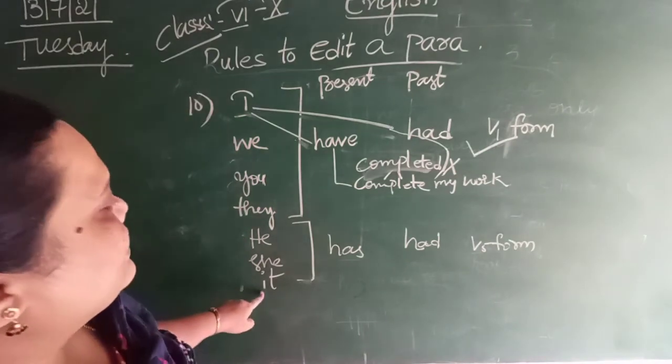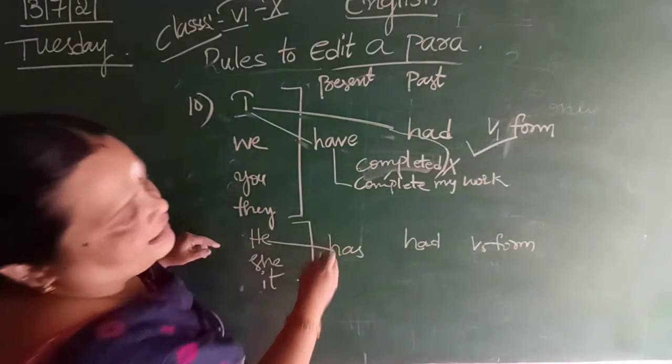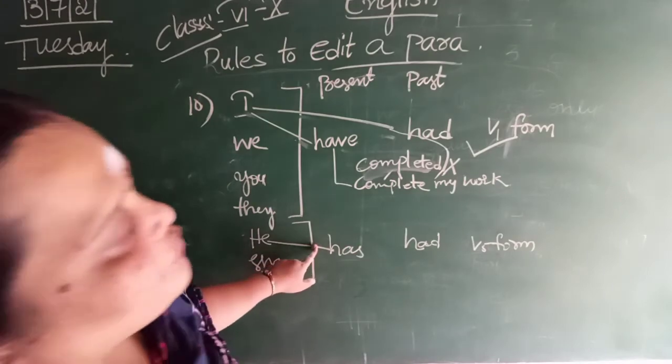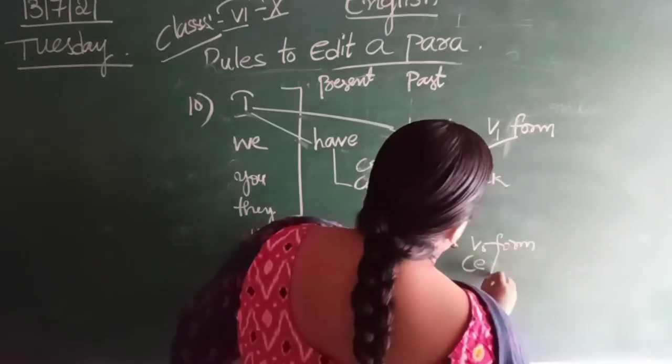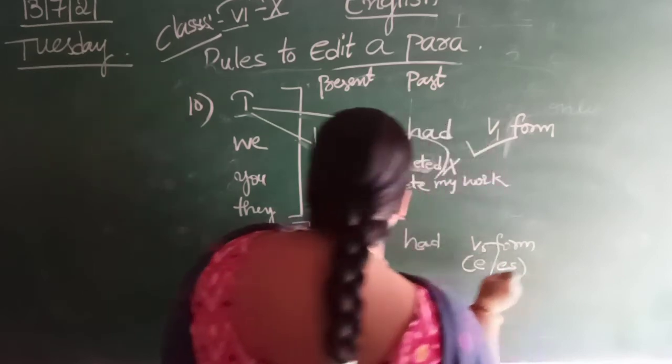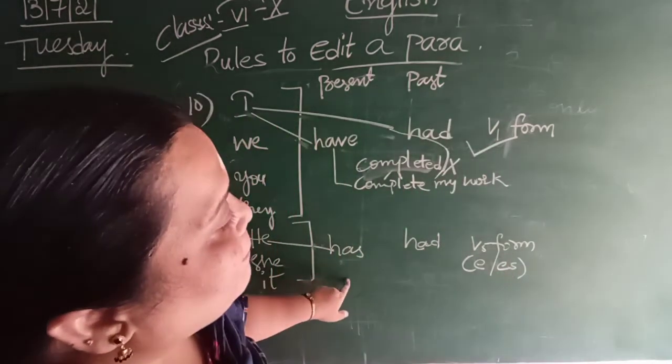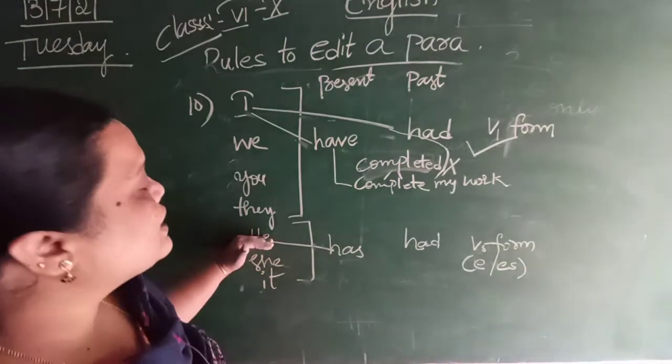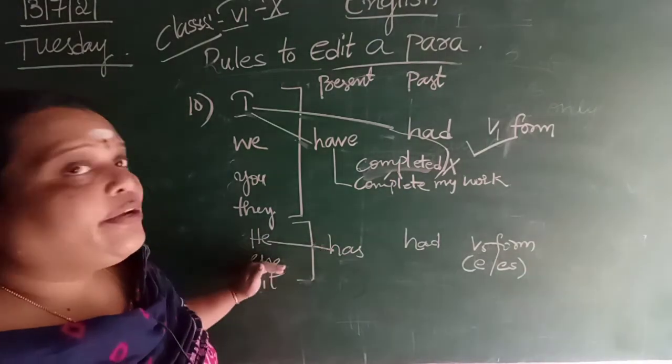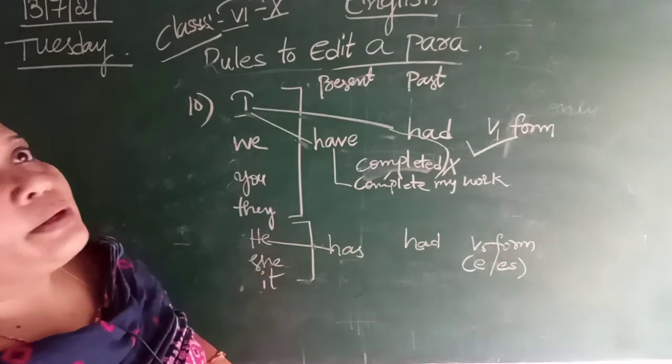Same thing if you are doing in past tense. I had complete my work. Next, he, she, it. He has. Now, here we have to use V5 form and then adding of E or ES. He has completes his work. Okay, he used yes. Next, his. She used yes, hers. Okay.